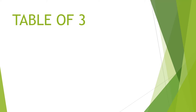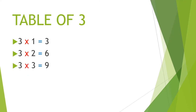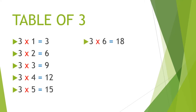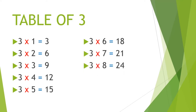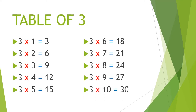Multiplication table of 3. 3 1's are 3, 3 2's are 6, 3 3's are 9, 3 4's are 12, 3 5's are 15, 3 6's are 18, 3 7's are 21, 3 8's are 24, 3 9's are 27, 3 10's are 30.